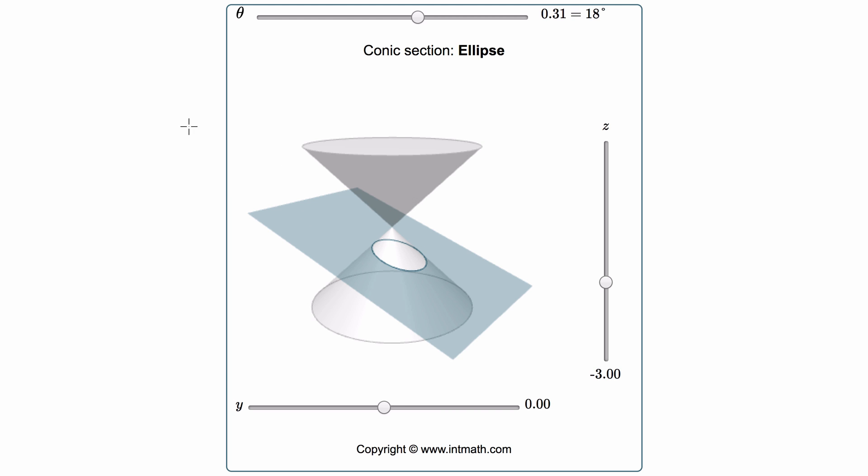If a plane is intersecting a single nappe, it's going to form an ellipse. As we adjust the angle of this plane, it's going to cause the ellipse to be more oval-shaped.